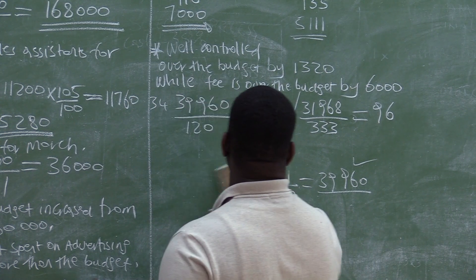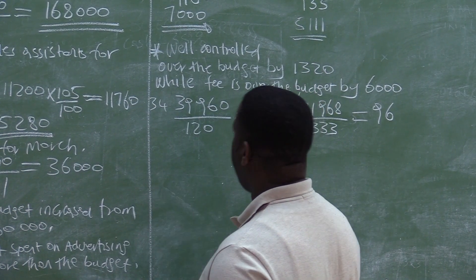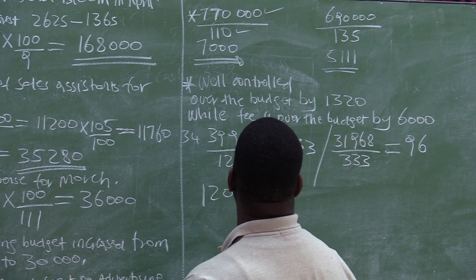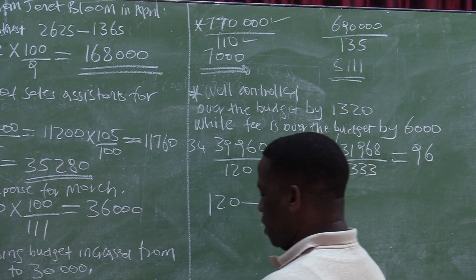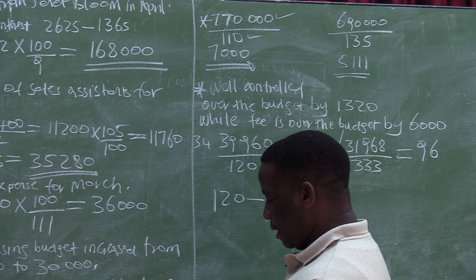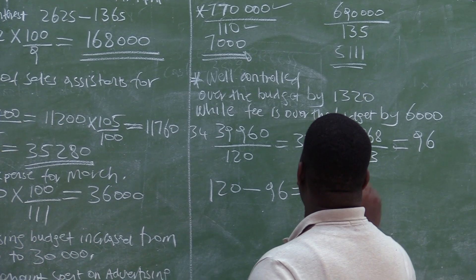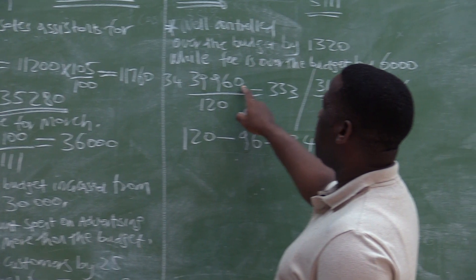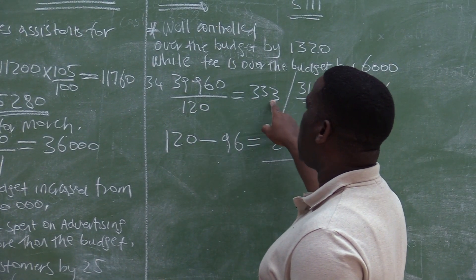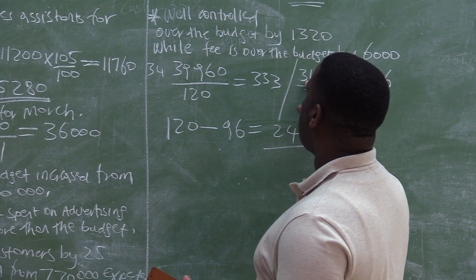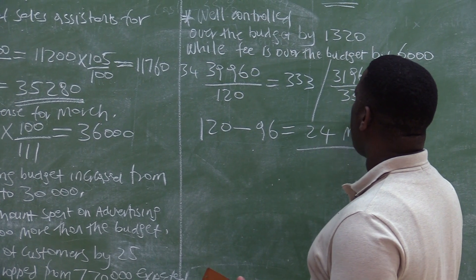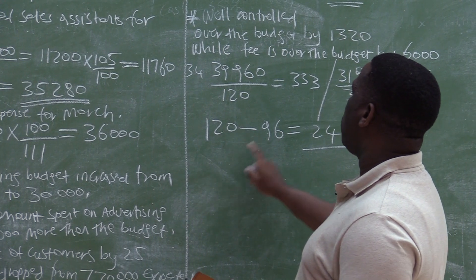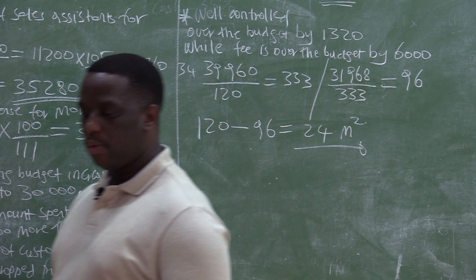We paid for 96 square meters. The question asks us to calculate the reduction in area rented. We were renting 120 square meters, and now we have paid for 96 square meters. So the reduction is 120 minus 96, which equals 24 square meters. We had budgeted $39,960 for 120 square meters at $333 each, and the actual payment of $31,968 corresponds to 96 square meters.